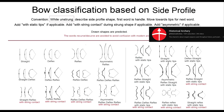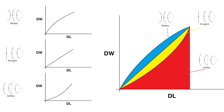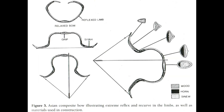Side profile. Two bows with the same draw weight at 28 inches but different side profiles will have different force draw curves and will store different amounts of energy. Generally, the more curved the bow, the more energy it stores. The change in efficiency is due to the change in leverage the bowstring has on the limbs through the draw length.